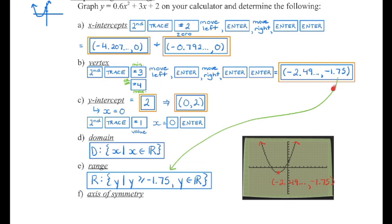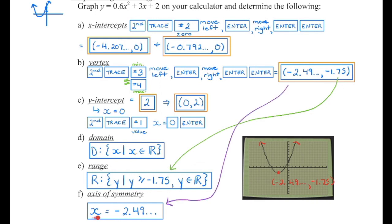We're going to take that y-coordinate of the vertex and use it in our range statement. The inequality depends on whether we have a maximum or minimum — whether we're opening up or down. The axis of symmetry is a vertical line passing through the vertex, so we're going to be crossing the x-axis at that negative 2.49. The equation of that line — which is always what we want for the axis of symmetry — is x equals the x-coordinate of the vertex. The vertex lies on the axis of symmetry.